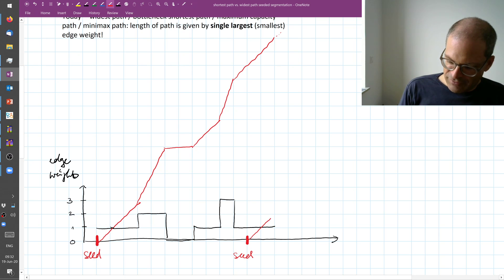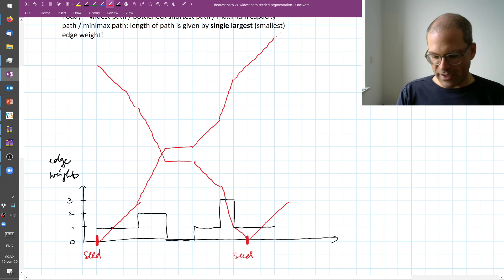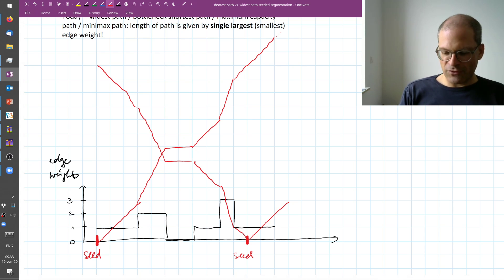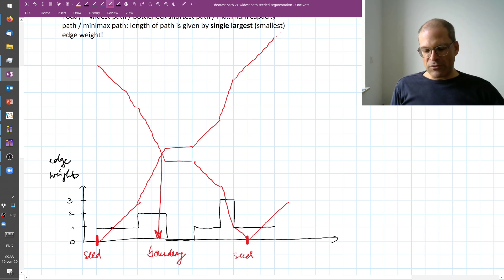So I am now computing this cumulative distance from the right seed. And so now we have cumulative cost to the left seed, cumulative cost to the right seed. And where these seeds intersect, this is where we have our decision boundary. So here I infer that this should become the boundary between my two segments. This was for the conventional shortest path.